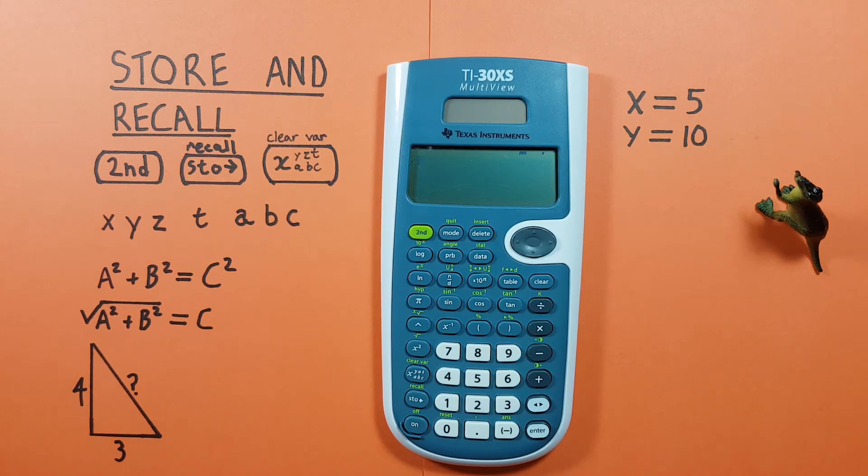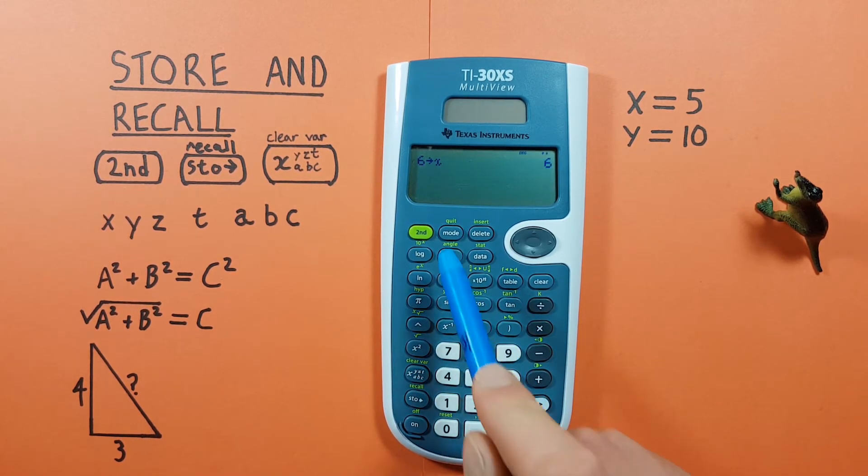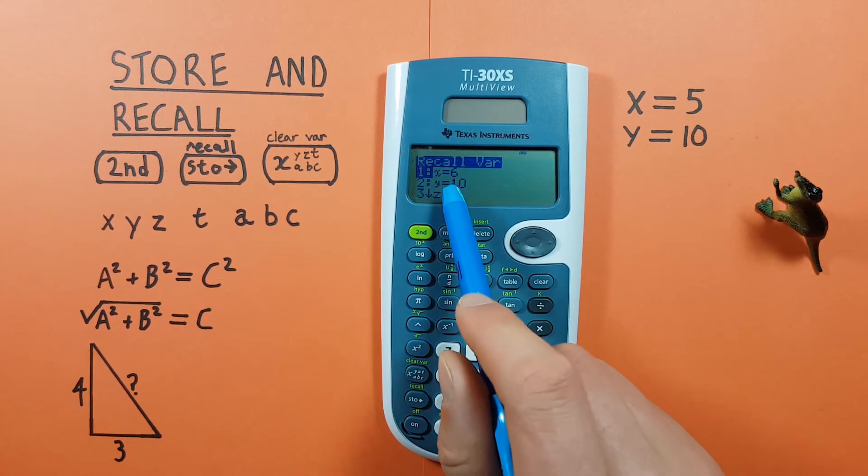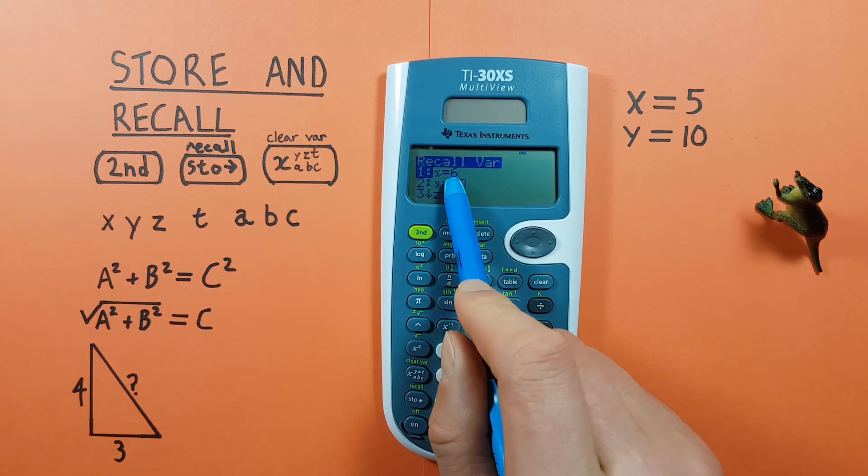You can override a saved value by saving a new number into it. So for example if we put 6 into the X slot and stored that, when we went to check our values, we see we now have 6 in our X.